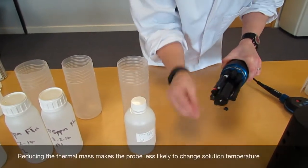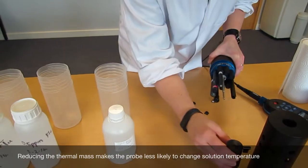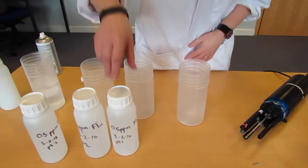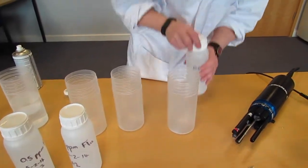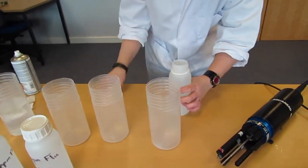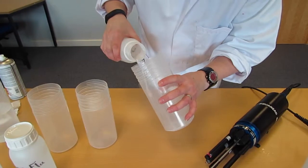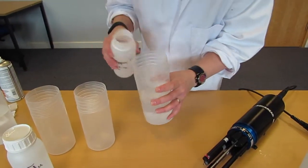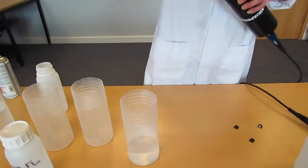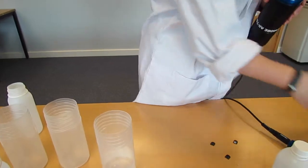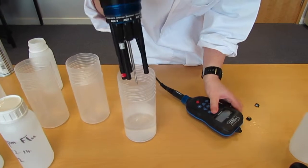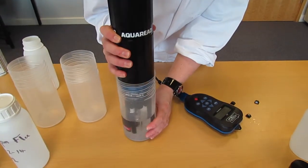We also remove the wiper arm from the probe. If we take 0.1, tip this into the calibration vessel. We can then insert the probe into the calibration solution.